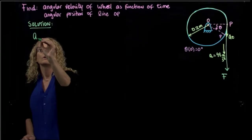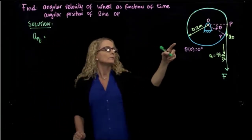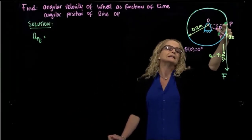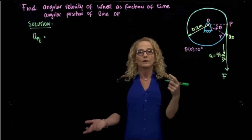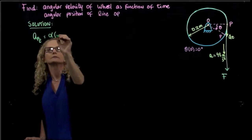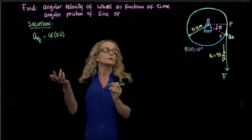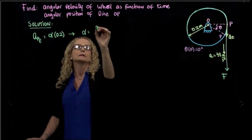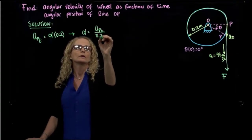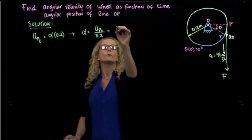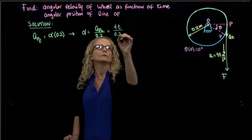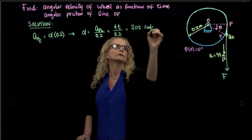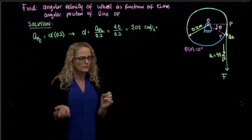The tangential acceleration of point P equals the derivative of velocity, and since velocity equals angular velocity times distance, the tangential acceleration equals angular acceleration times the radius, 0.2 m. We don't have angular acceleration directly, but we have the tangential acceleration. So the angular acceleration equals the tangential acceleration over the radius: 4T over 0.2, which gives 20T radians per second squared.